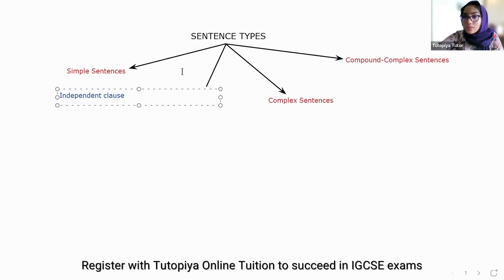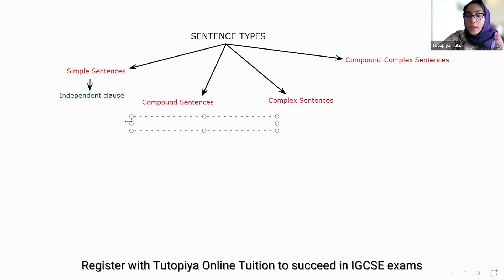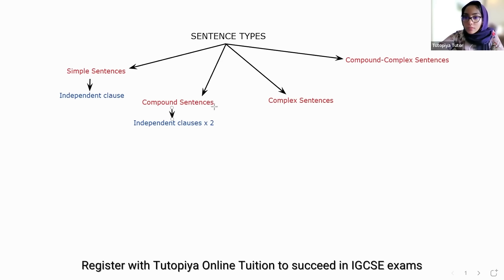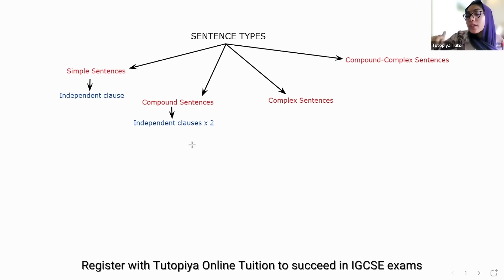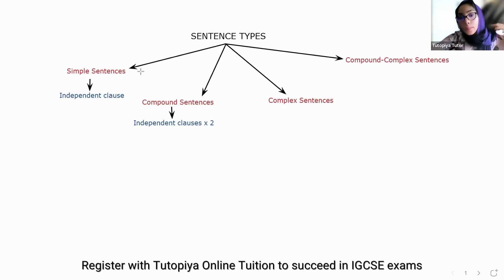These are independent clauses. A compound sentence is when you add two independent clauses together using a conjunction. For example, 'the sun rises in the east and sets in the west.' Both of those clauses make sense on their own, but when you connect them using a conjunction, it becomes a longer sentence — that's what you call a compound sentence.